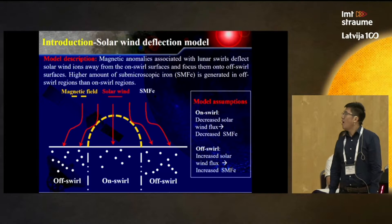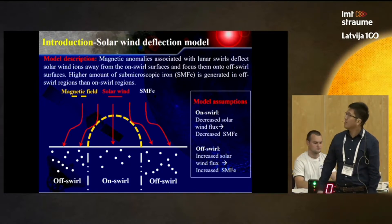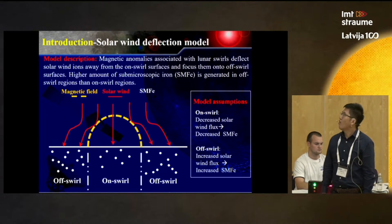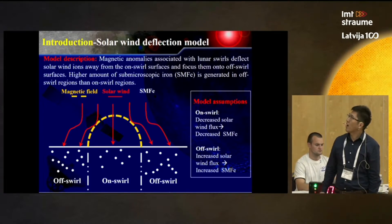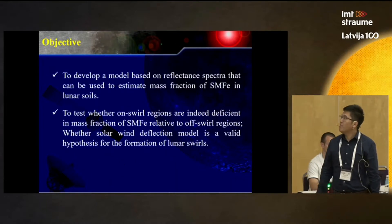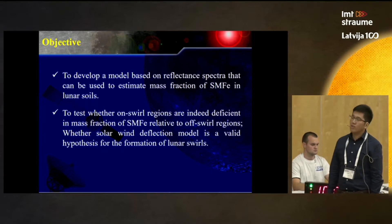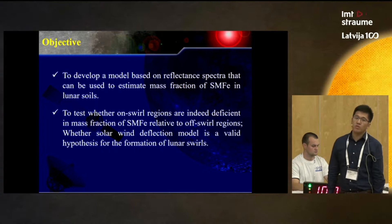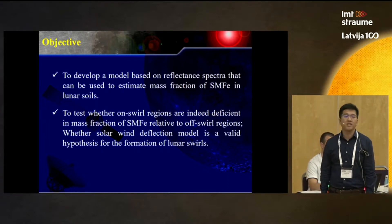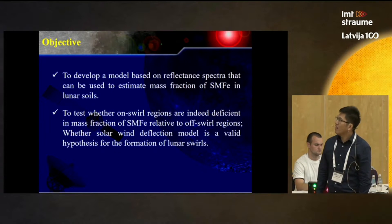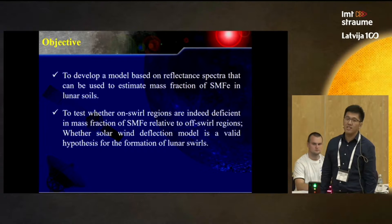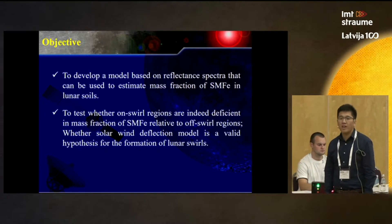According to this hypothesis, on-swirl regions should have decreased solar wind flux and thus decreased sub-microscopic iron content. For off-swirl regions, they will receive increased solar wind flux and thus increased generation of sub-microscopic iron. Based on this model, the objective of this research is first to develop a spectral model that can be used to estimate the mass fraction of sub-microscopic iron in lunar soils, and secondly to apply this model to reflectance data and test whether on-swirl regions are indeed deficient in sub-microscopic iron relative to off-swirl regions.